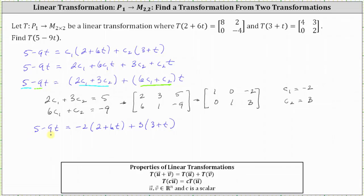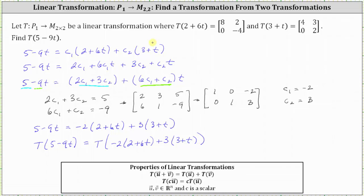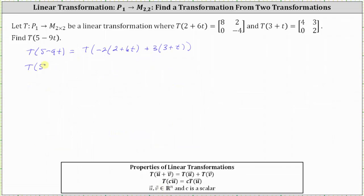Now that we have 5 minus 9T written as a linear combination of the expressions we know — specifically, 5 minus 9T equals negative 2 times (2 plus 6T) plus 3 times (3 plus T) — we will take the transformation of both sides. This gives us T(5 minus 9T) equals T of negative 2 times (2 plus 6T) plus 3 times (3 plus T). Let's continue on the next slide.